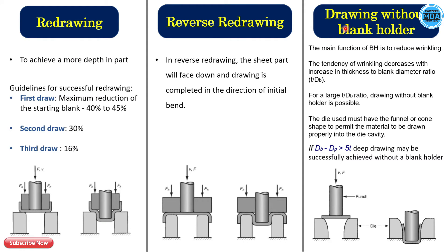Here you can see the redrawing operation, reverse drawing operation, reverse redrawing operations, and the drawing without blank holder operation. In the redrawing operation, we use the already drawn part. The drawing part faces towards the punch, is held with the blank holder, and we apply pressure to get the required depth. We use the redrawing operation to achieve greater depth in the part.